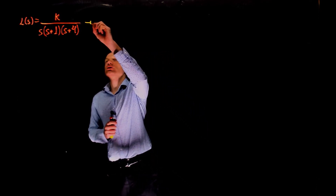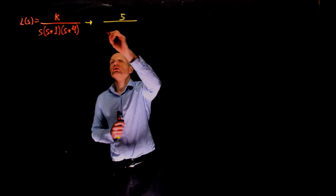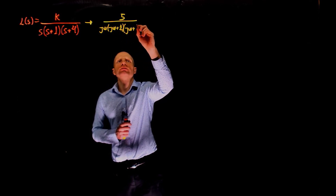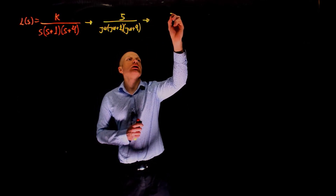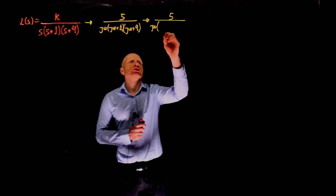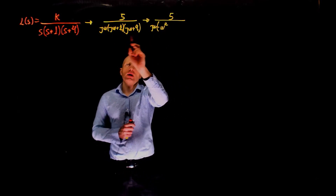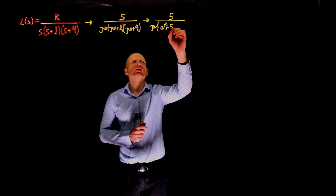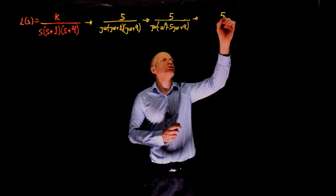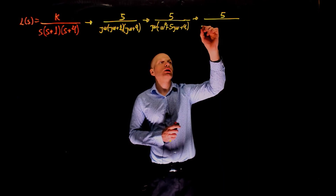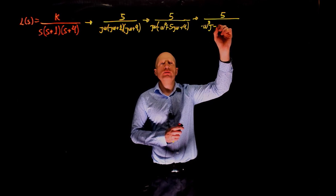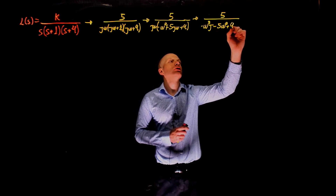When k equals 5, the function can be rewritten as 5 over j omega times (j omega plus 1) times (j omega plus 4). This can be expanded by multiplying these two poles: j omega times j omega is negative omega squared, and then we have plus 5j omega plus 4. Multiplying j omega with the other part of the denominator gives 5 over negative omega cubed times j, minus 5 omega squared plus 4j omega.